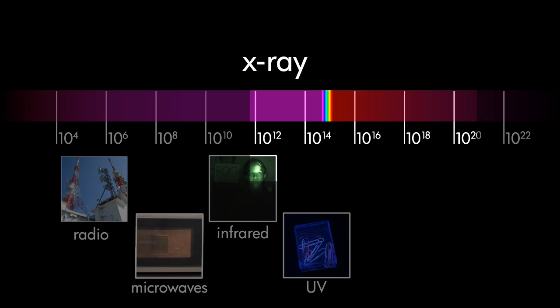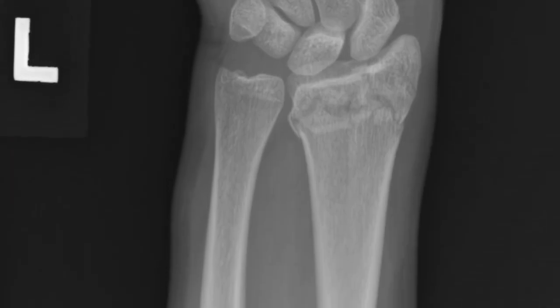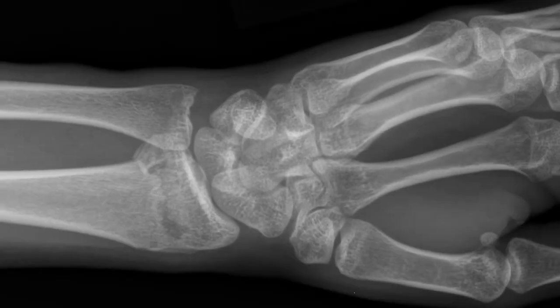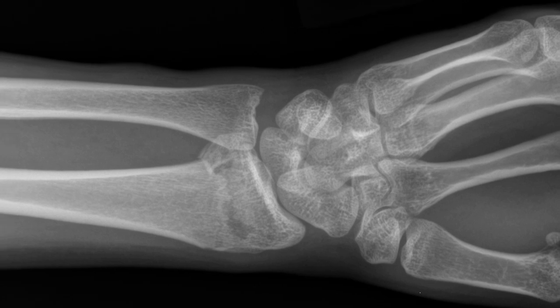In 1895, scientists discovered that X radiation, or X-rays, are useful for imaging bones and other dense materials in the human body. Some stars also produce X-rays.